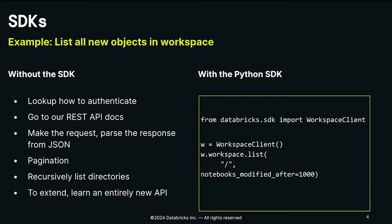To really drive home this point, here's an example. Without the SDKs, if you wanted to list all new objects in your workspace, you'd have to find the right documentation, figure out how to authenticate, find the right REST API spec, write the request, parse the response, figure out pagination, and maybe recursively list your directories. But now with the Python SDK, all of these use cases can be addressed in three to four lines of code. The bottom line is we want you to focus on your business logic, not figuring out Databricks APIs.